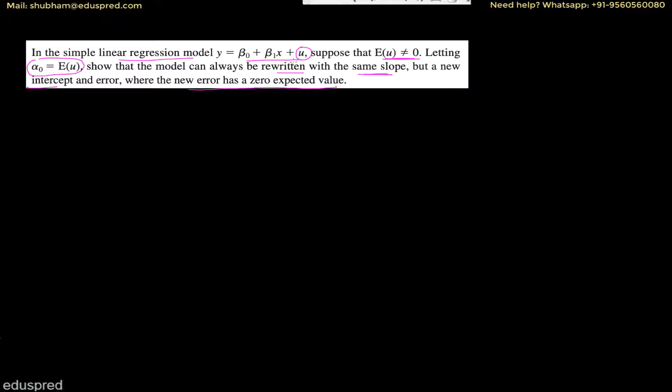Let's understand what this question is trying to say. We have y equal to beta zero plus beta one x plus u, and we are given that the expected value of u is not equal to zero. In fact, it is equal to alpha zero, which is a particular constant. Now, just for the sake of ease, instead of writing alpha zero, let me write a particular number, because then it would be easier to understand.